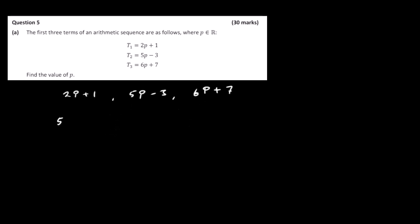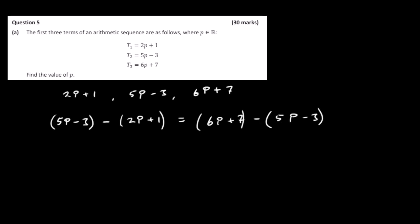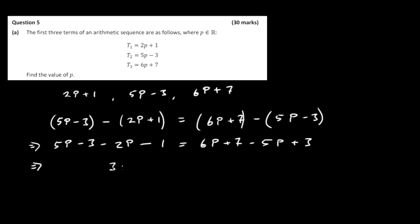So if we take 5P minus 3 (the second term) subtract the first term 2P plus 1, that should give me the same as the third term 6P plus 7 minus the second term 5P minus 3. We need to solve this for P. Taking away the brackets: 5P minus 3 minus 2P minus 1 equals 6P plus 7 minus 5P plus 3. Simplifying: 5 minus 2 is 3P, and minus 3 minus 1 is minus 4.